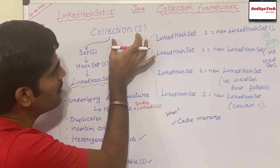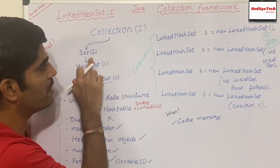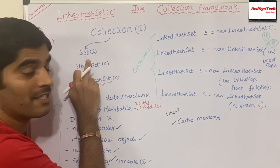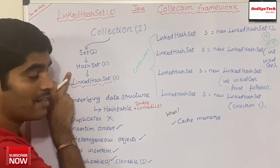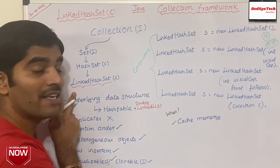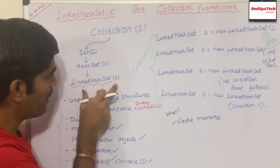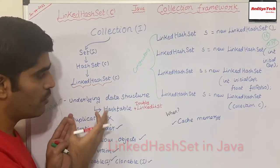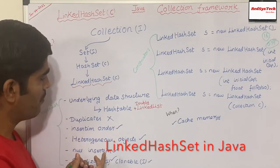Basically, under the Collection interface we have the Set interface. Under the Set interface we have the HashSet class. Under the HashSet class we have the LinkedHashSet class. So let's go through the properties of LinkedHashSet.